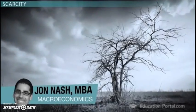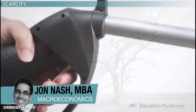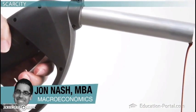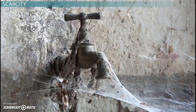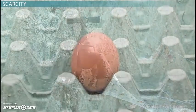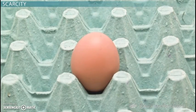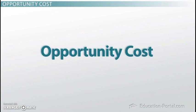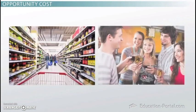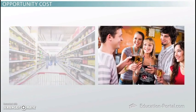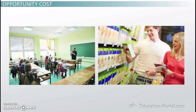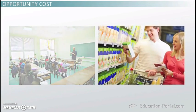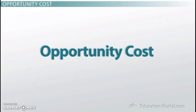The basic economic problem is the issue of scarcity. Because resources are scarce but wants are unlimited, people must make choices. This showcases the most important concept in macroeconomics: opportunity cost. Everyone has the same amount of hours in a day, but we all make different decisions about what we do, what we choose to buy, and how we spend our time. What determines these choices? Opportunity cost does.